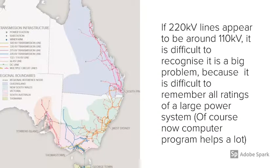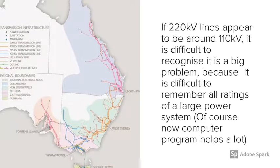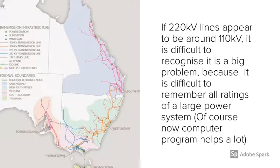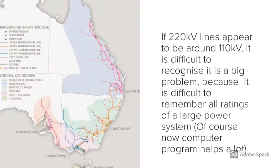If 220 kV lines appear to be around 110 kV, it's difficult to recognize it's a big problem because it's difficult to remember all ratings of a power system.